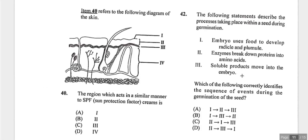Question forty shows a skin diagram with layers. The epidermis is the outer layer and the dermis is beneath it. The Malpighian layer is the region that acts similarly to sun protection, as that is where melanin is deposited — providing UV protection.